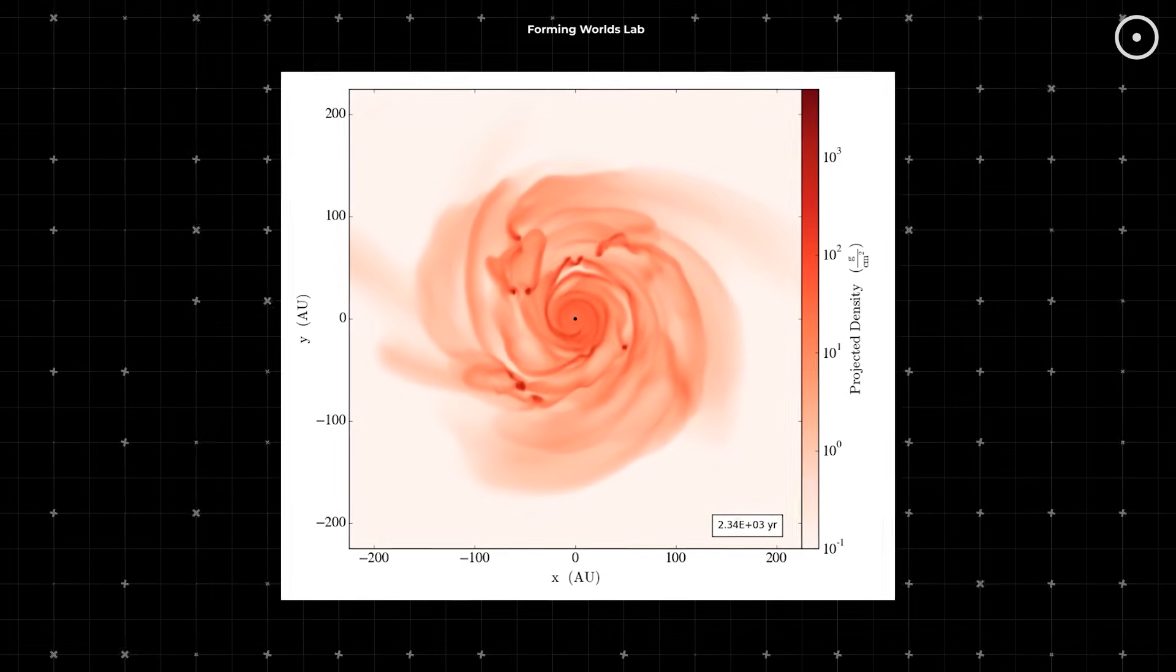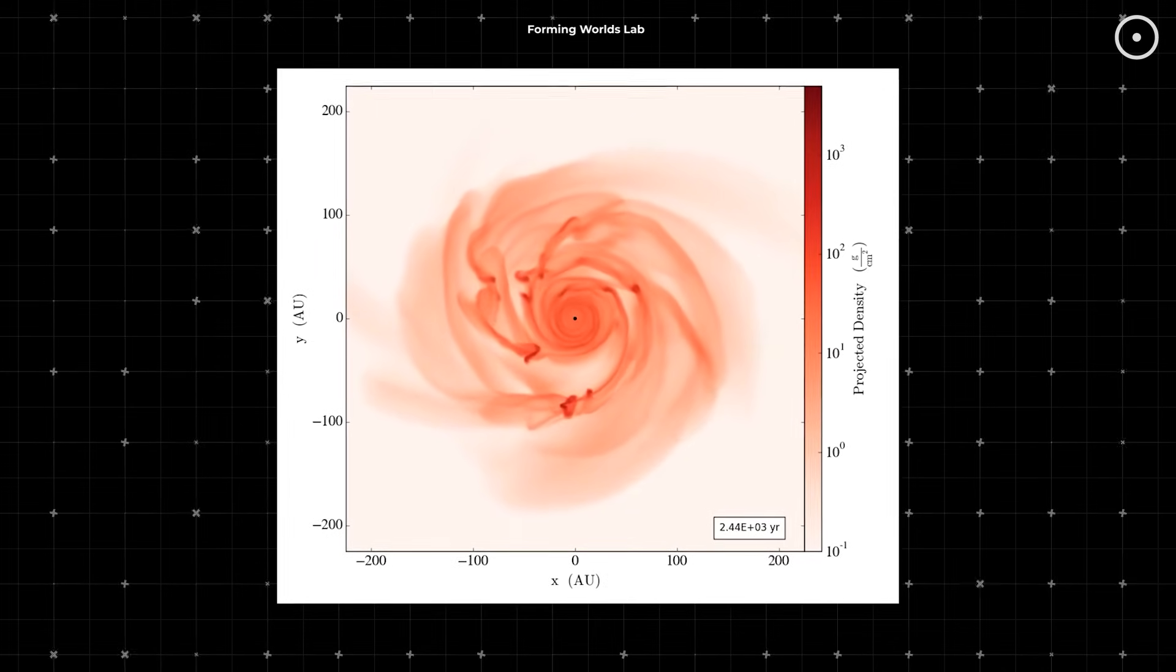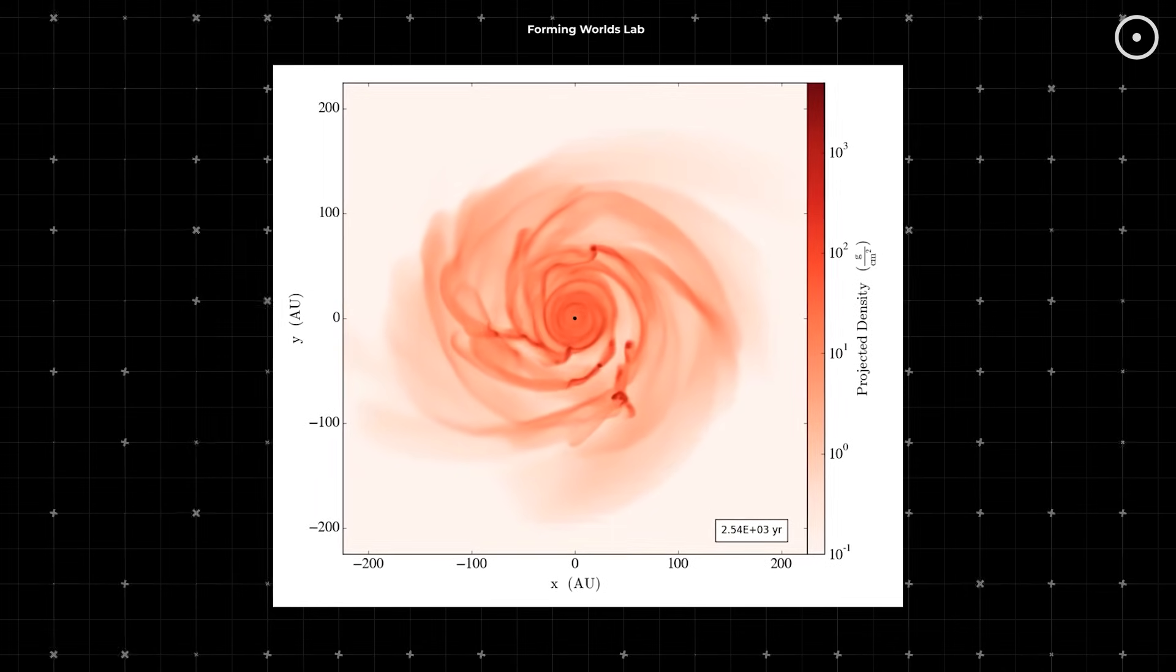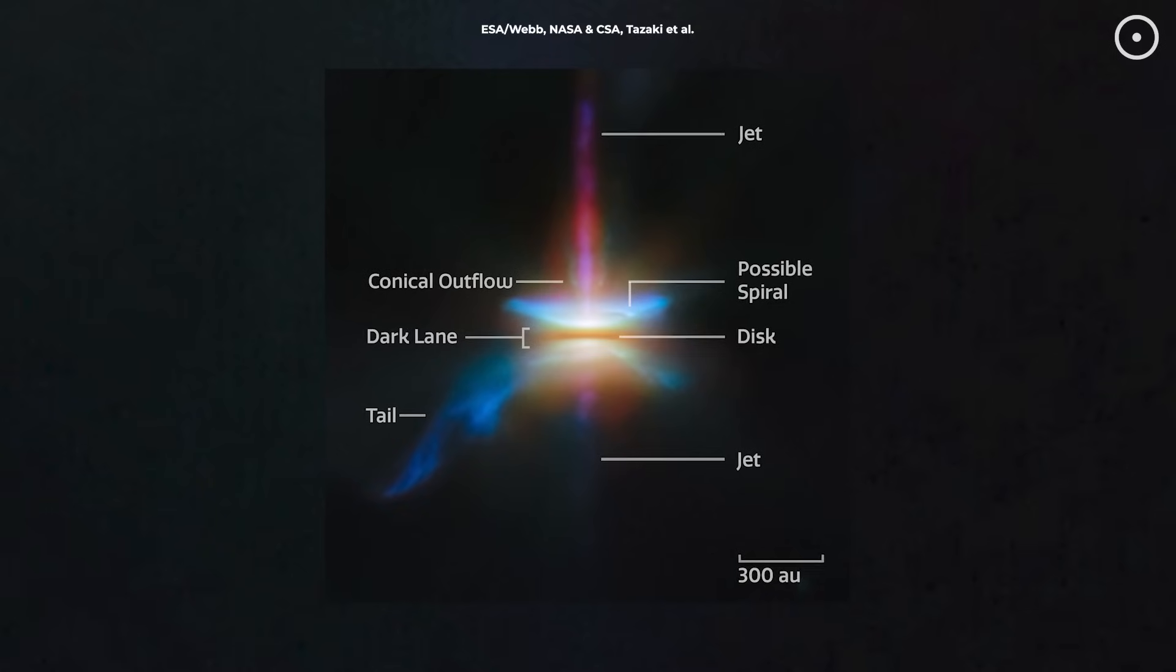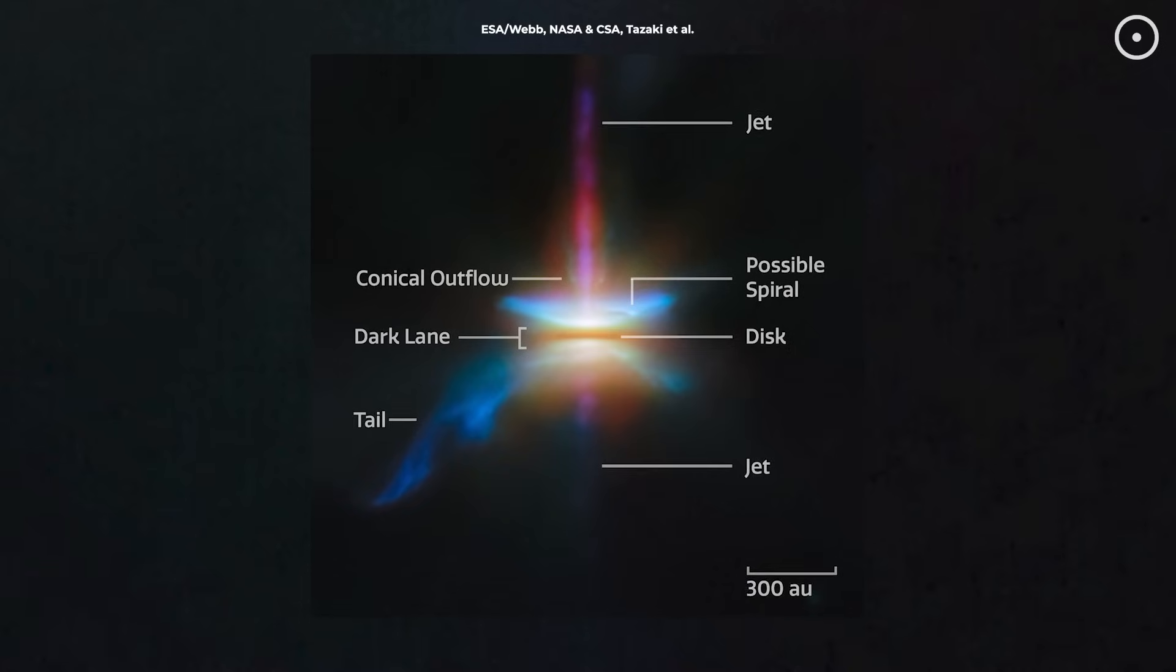Dr. Ryo Tazuki and his team at the University of Tokyo have just made an incredible discovery. They found something unexpected. A mysterious spiral pattern in the disk, similar to what we've seen around other young stars.